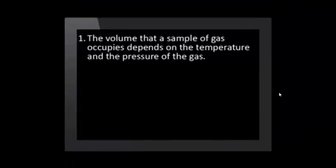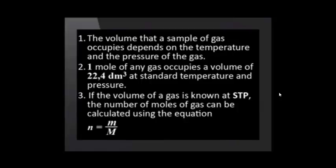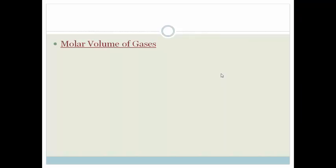Let us recap what we have learnt in today's lesson. The volume that a sample of gas occupies depends on the temperature and the pressure of the gas. One mole of any gas occupies a volume of 22.4 dm³ at standard temperature and pressure. If the volume of a gas is known at STP, the number of moles of gas can be calculated using the equation n = V ÷ Vm. The most important thing to remember is that the molar volume of any gas at STP is 22.4 dm³. It is on your formula sheets, but you need to know when to use it, and we will show you lots of examples in the next few videos. Have a great day.